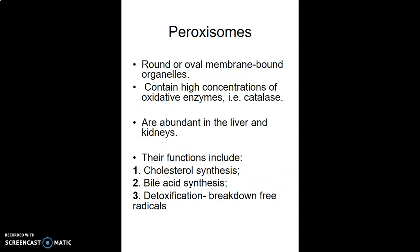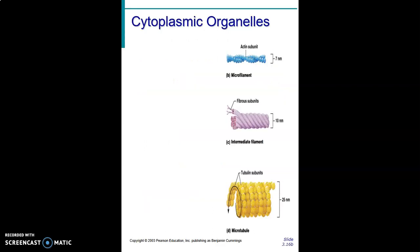Peroxisomes are round or oval in shape, membrane-bound, and contain a high concentration of oxidative enzymes. Their main function is detoxification. We find abundant peroxisomes in liver and kidney cells. Their functions include cholesterol synthesis, bile acid synthesis, and detoxification through breakdown of free radicals.